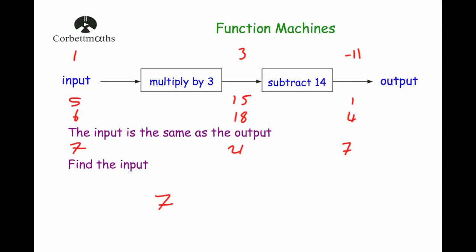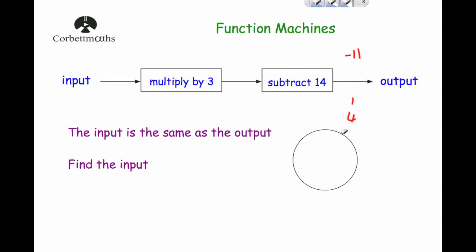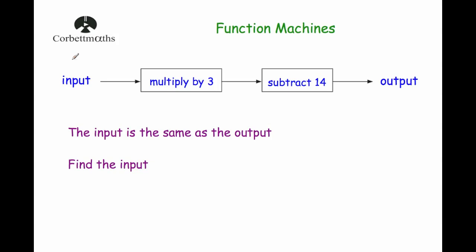Now the algebraic method. Call the input x — just like in the last question. Multiply by 3 gives 3x. Subtract 14 gives 3x minus 14. So if the input is x, the output is 3x minus 14.